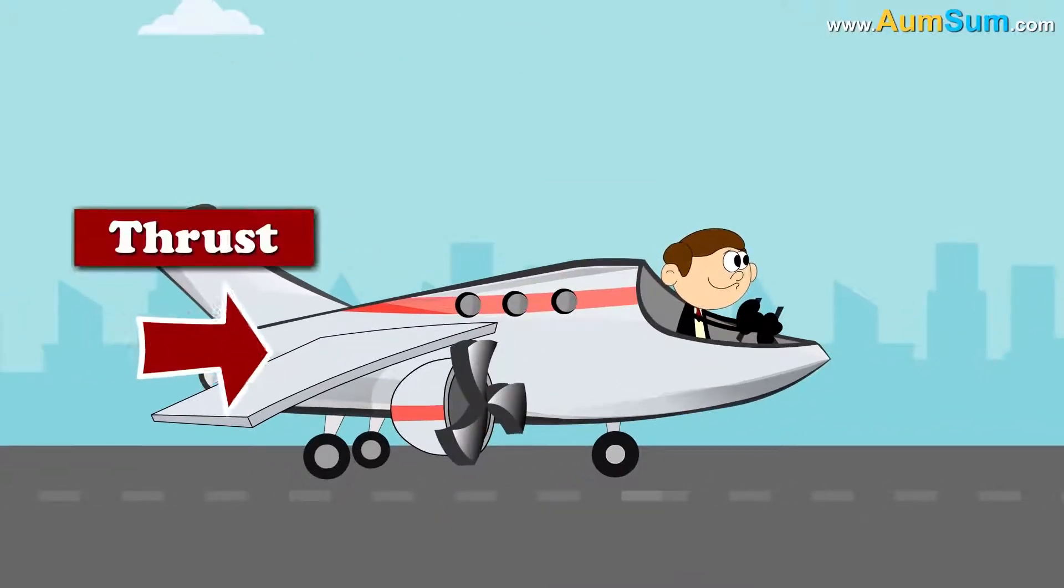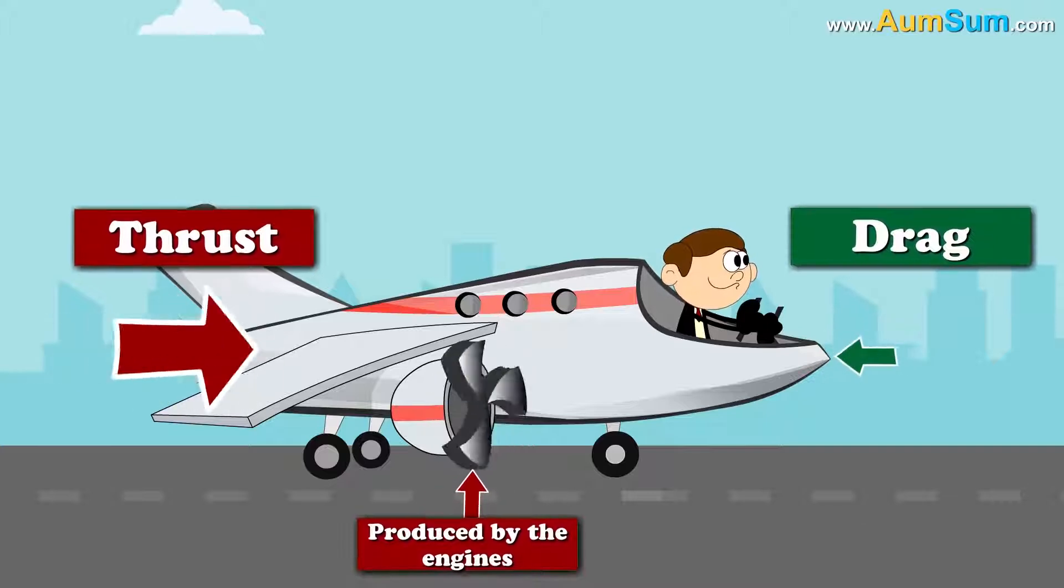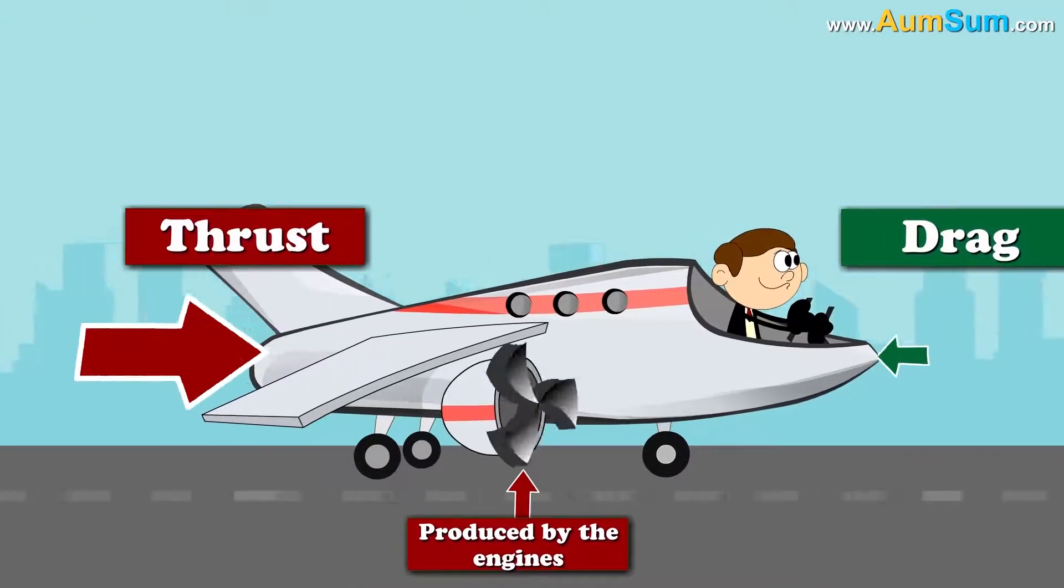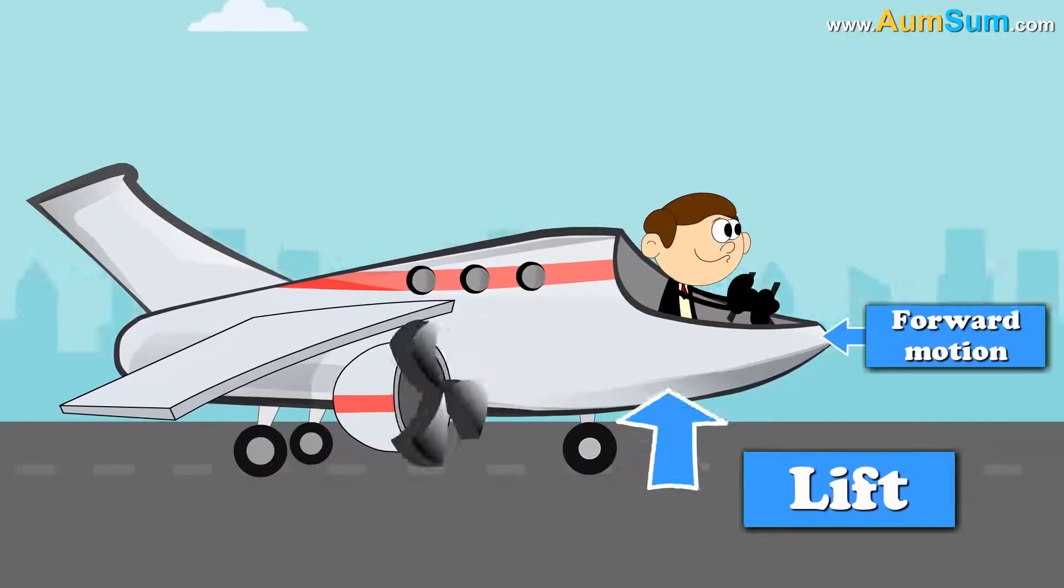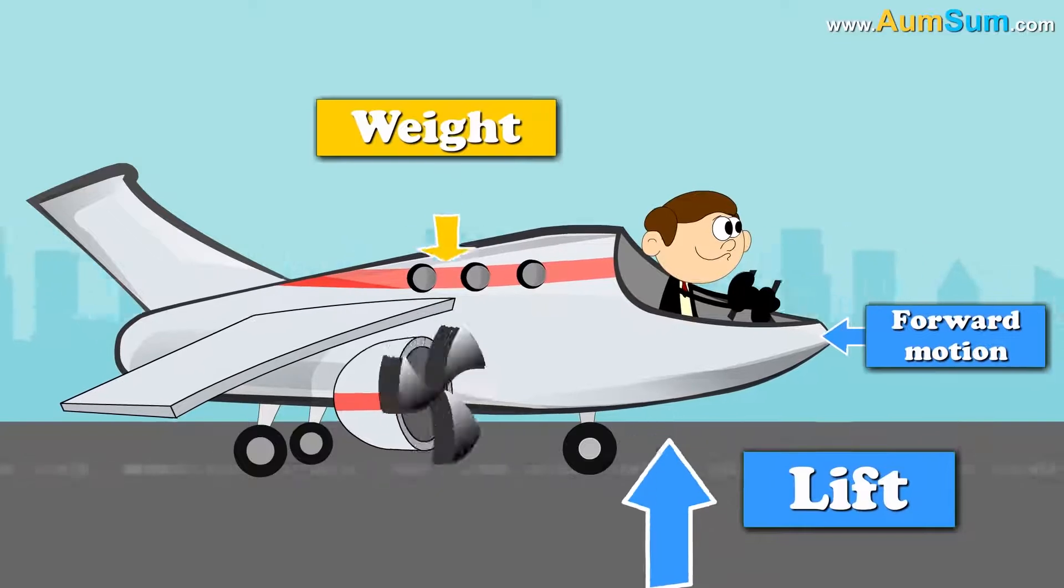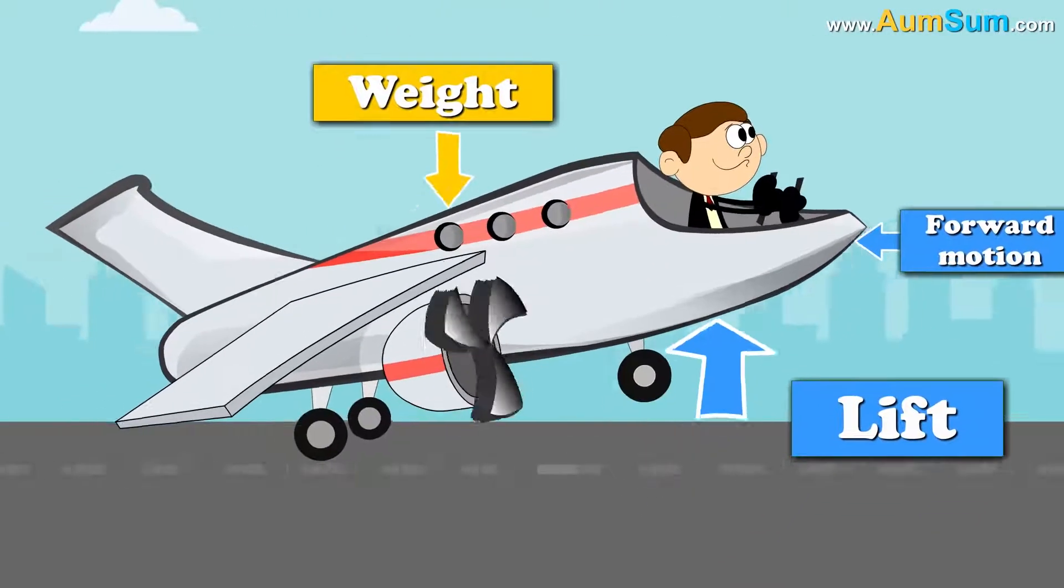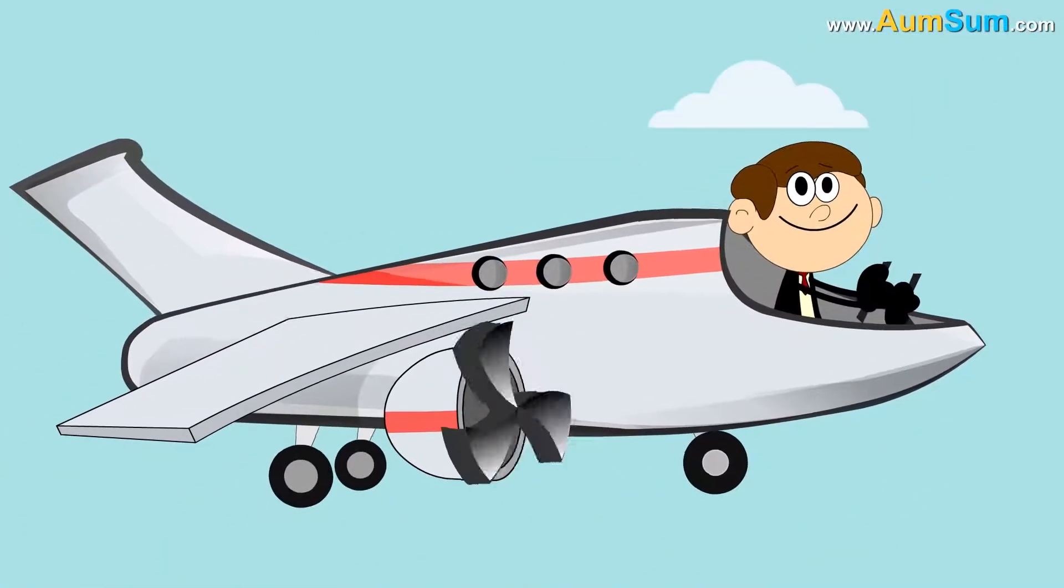Now, when the force of thrust produced by the engines is greater than the force of drag produced due to air resistance, the airplane moves forward. Also, when the force of lift produced due to forward motion is greater than the force of weight produced due to gravity, the airplane moves upward. In simple terms, this is how an airplane flies.